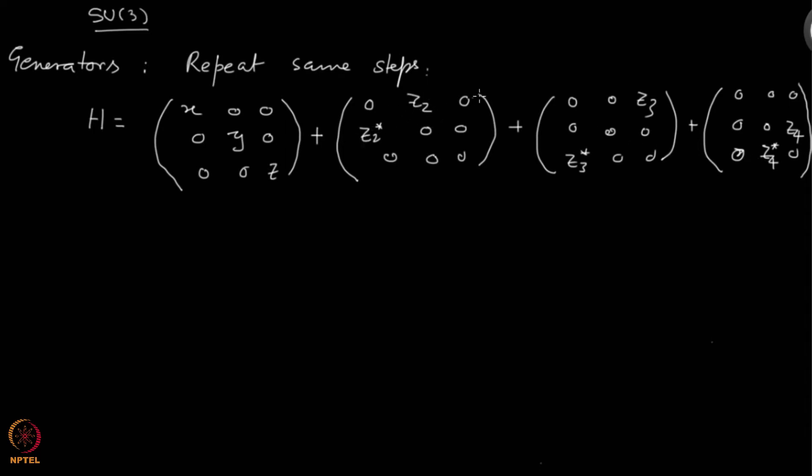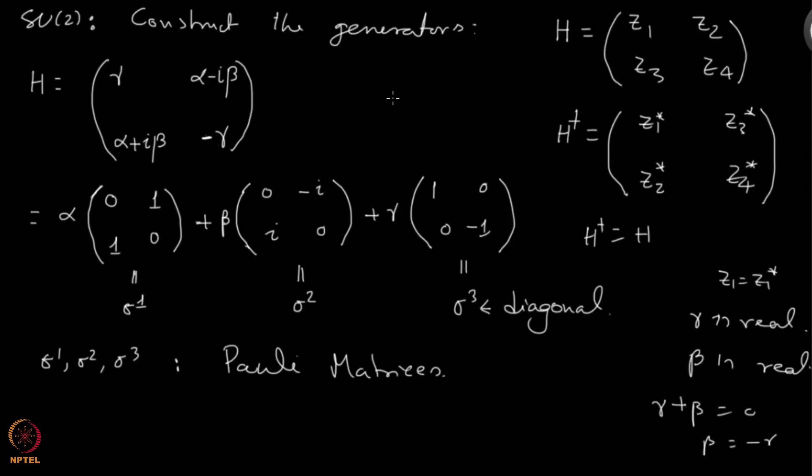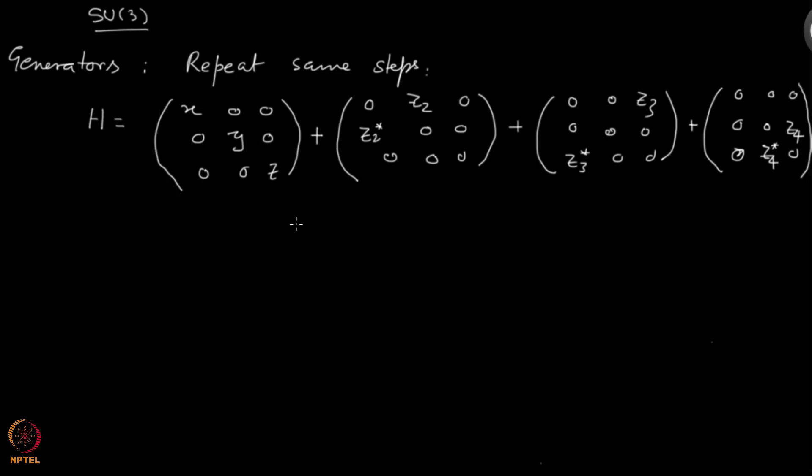You write z2 as x plus iy or x minus iy and you will get these matrices, just like what you got here—you will get 1, 1 and minus iy. Exactly the same thing will get repeated.